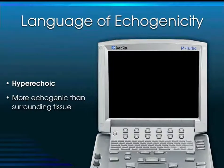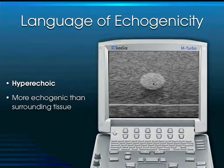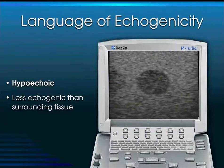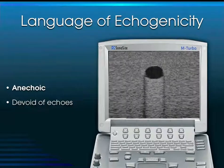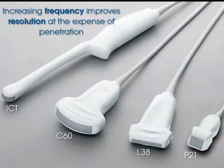The term 'brightness' is better described as echogenic. A structure is hyperechoic if it is more echo-bright than the surrounding tissue. Something is hypoechoic if it is less echogenic than the surrounding tissue. And finally, something is anechoic when it is completely devoid of echoes and appears jet black compared to the surrounding tissue.